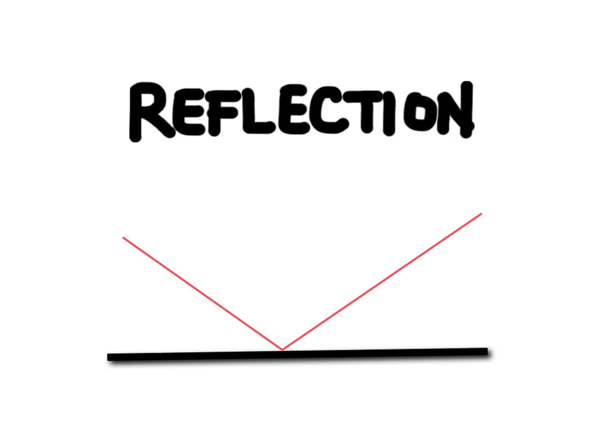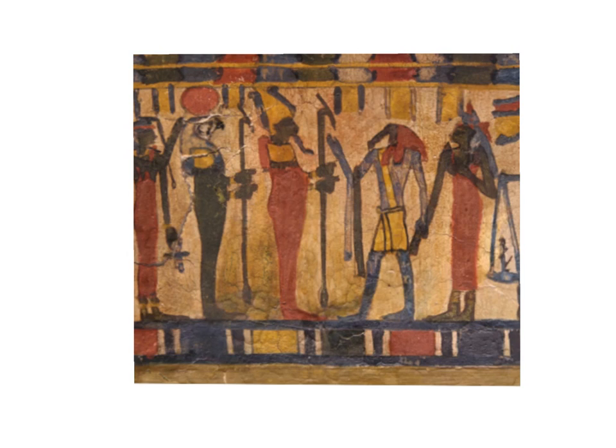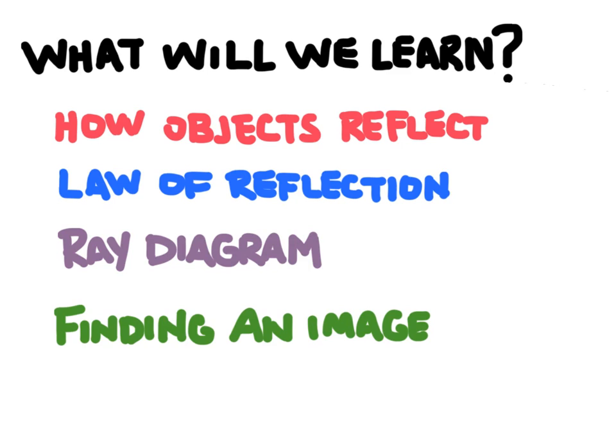In this video we're going to learn about reflection and plain mirrors. Mirrors date back to the earliest civilizations, and ancient Egyptians used polished metal to reflect their images around 4000 BC. We're going to learn how objects reflect in a mirror, the law of reflection, how to draw ray diagrams, and how to describe an image created by a mirror.